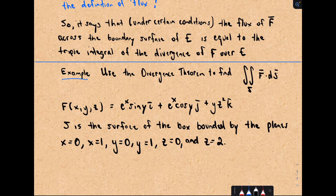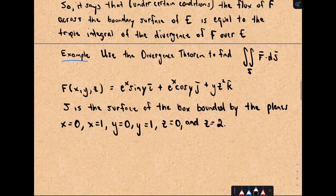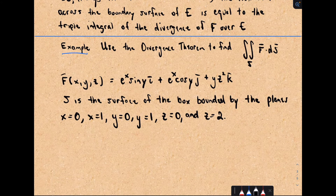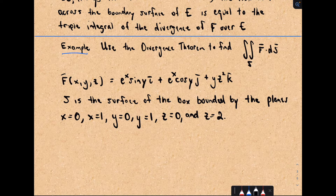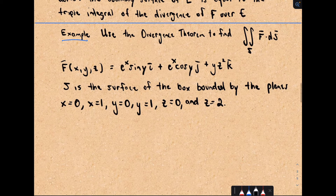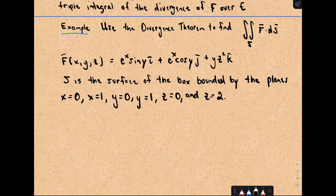Let's do a couple of examples. Here I've got F(x, y, z) = e^x sin(y) i + e^x cos(y) j + yz² k. And S is going to be the surface of the box bounded by the planes x = 0, x = 1, y = 0, y = 1, z = 0, and z = 2. To get started, we'll find the divergence.